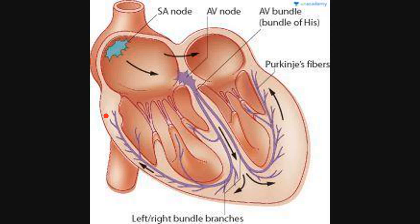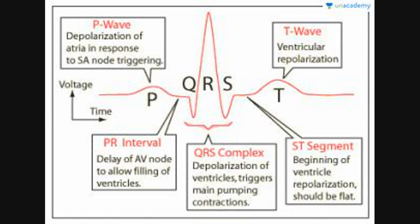Now we will see a generalized ECG pattern. Here you can see that the first wave is known as the P wave, after which there is Q, R, and S, and then there is T. The P wave represents the depolarization of the atria in response to SA node triggering — as the SA node triggers, the complete atria depolarize. After the atrial depolarization there is ventricular depolarization, so the QRS complex is present which shows the depolarization of the ventricles. After the QRS complex, the main pumping contractions of the heart occur.